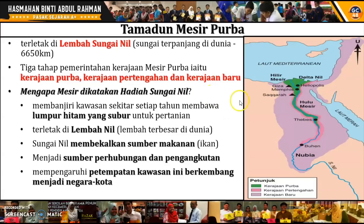Kita tengok pula kepentingan Sungai Nil. Mengapa Mesir dikatakan hadiah Sungai Nil? Ini adalah menurut Herodotus. Yang pertama, Sungai Nil membanjiri kawasan sekitarnya setiap tahun dan bersama-sama banjir itu membawa lumpur hitam yang subur. Lumpur hitam inilah yang sesuai untuk aktiviti pertanian. Yang kedua, lembah Nil adalah lembah yang terbesar di dunia, dan Sungai Nil juga membekalkan sumber makanan seperti ikan.